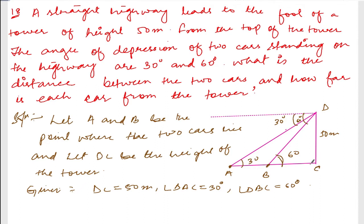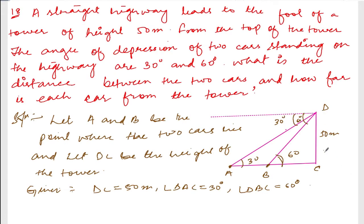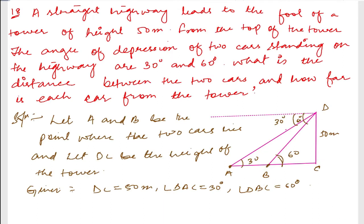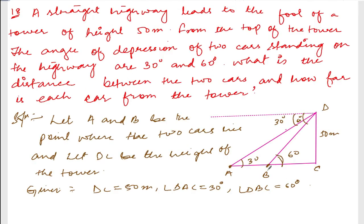Let us find tan of 60 degrees. Tan of 60 degrees equals DC divided by BC. Tan 60 is root 3, and DC is 50, so root 3 equals 50 divided by BC. Transferring BC to this side: BC is equal to 50 divided by root 3. Let me call this equation number one.